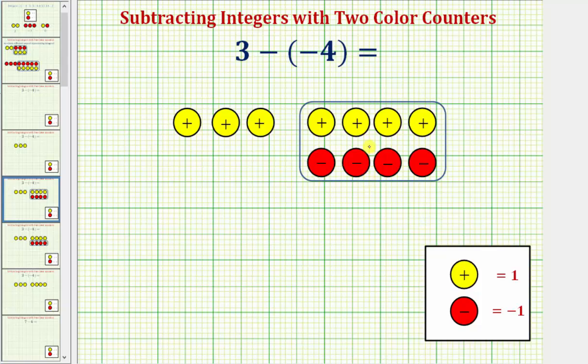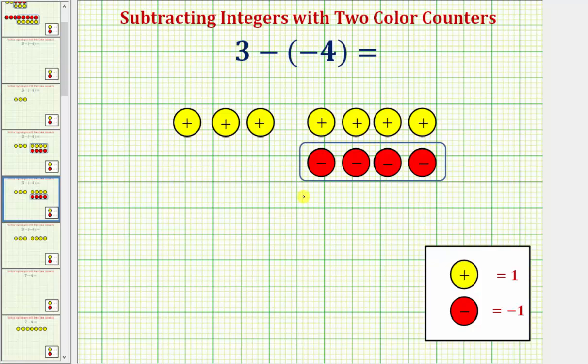Notice how, because we have minus negative four, we can now remove or take away these four red counters. So we're going to remove or take away these four red counters.